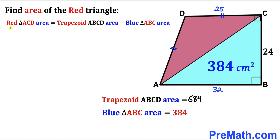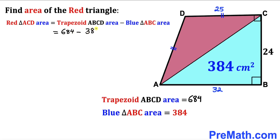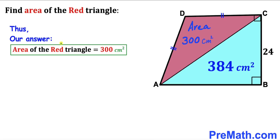For our final step, the area of the red triangle ACD = area of trapezoid ABCD − area of blue triangle ABC = 684 − 384 = 300 cm². So the area of the red shaded triangle ACD is 300 cm². That's our final answer.